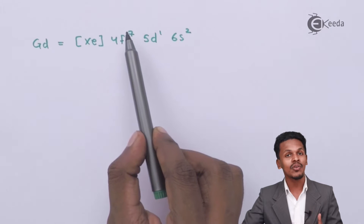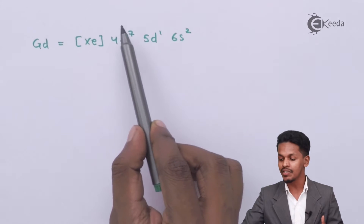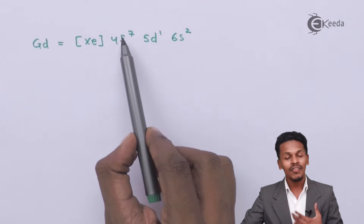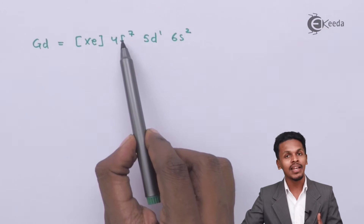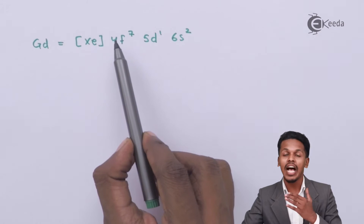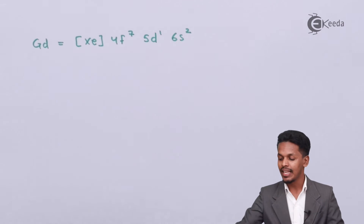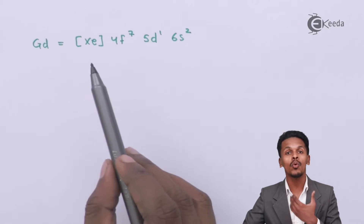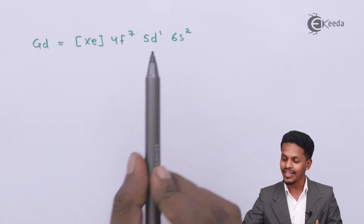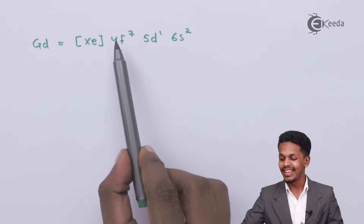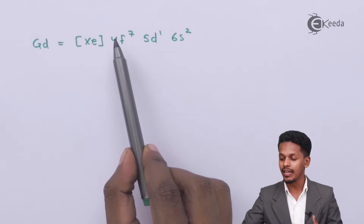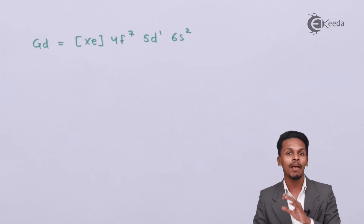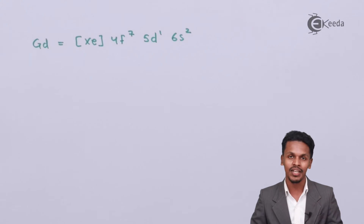In fact, the last electron enters the 5d orbital instead. The reason is that the 4f orbital at 7 electrons is exactly half-filled, making this element much more stable in terms of electronic configuration. That is why there is no 4f⁸ configuration — in fact it is 4f⁷ 5d¹ 6s², and this is the abnormal electronic configuration for gadolinium.